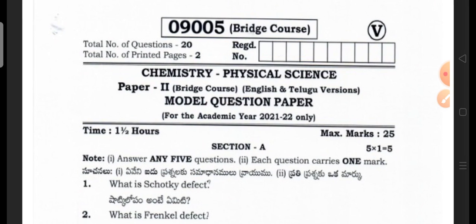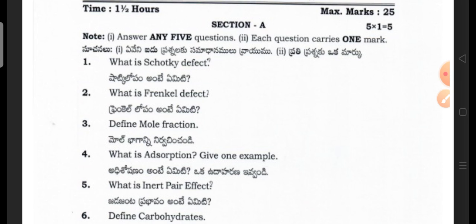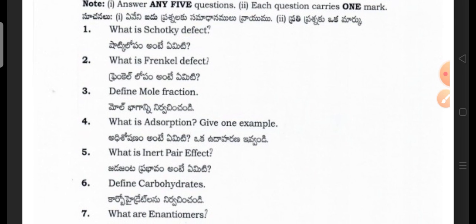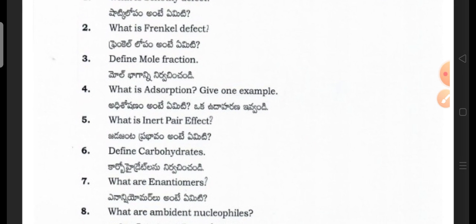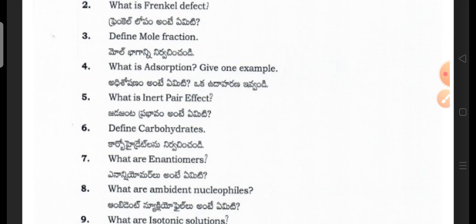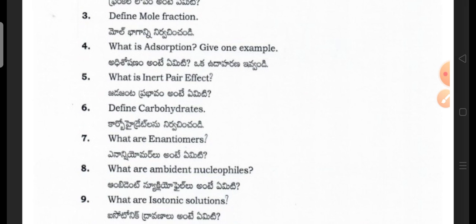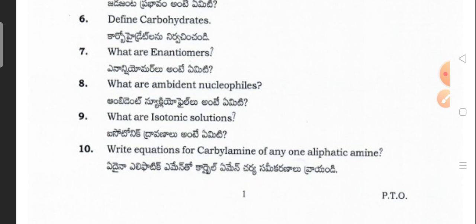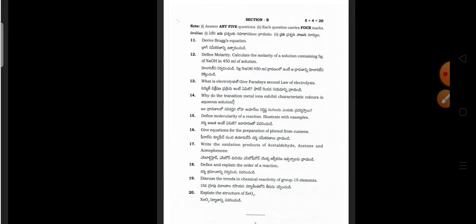This is the chemistry question paper for bridge second year students. Section A has one-mark questions and Section B has four-mark questions — attempt 5 out of 10 in each section. Chemistry Section A sample questions: What is Schottky defect? What is Frenkel defect? Define mole fraction. What is absorption — give one example. What is the inert pair effect? Define carbohydrates. What are enantiomers? What are ambident nucleophiles? What are isotonic solutions?